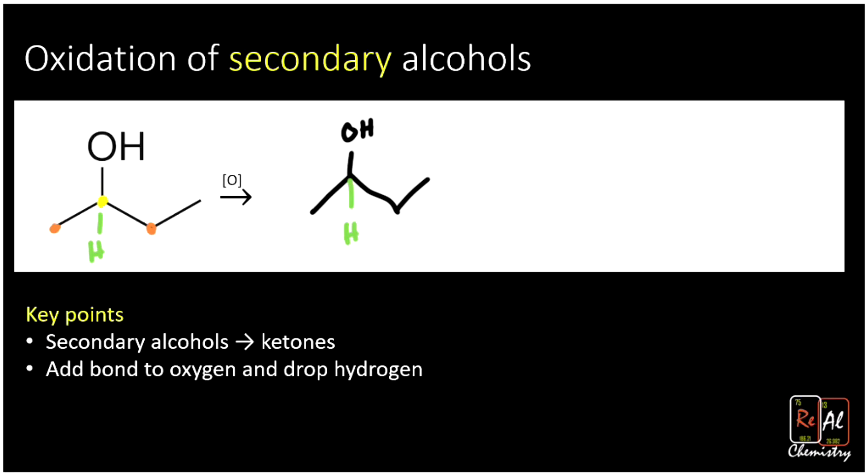We want to drop our two hydrogens that we see there and add a bond to oxygen just like before. So we add a bond to oxygen that gets rid of our alpha hydrogen down there, and it gets rid of the hydrogen on the OH group. And now notice there's no alpha hydrogen, so it can't be oxidized again. So that's the complete oxidation of a secondary alcohol. It goes from a secondary alcohol to a ketone. That's just where we have a C-double-O bond in the middle of our molecule. We added a bond to oxygen and we dropped our alpha hydrogen.